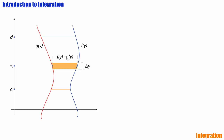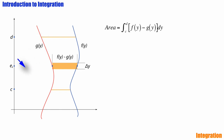Firstly, you will note from this graph that the approximating rectangles are now horizontal and the formula has a y in it in place of an x. The f always denotes the right-hand function and the g the left-hand function. And c is lower on the y-axis than d.